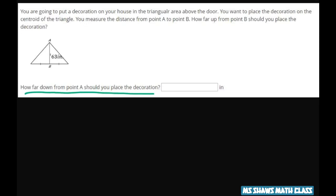Now if you want to see how far down from point A, you take the other formula and you say AC equals two-thirds of AB. So that's going to be two-thirds of 63.